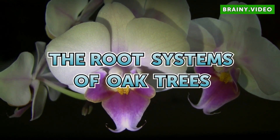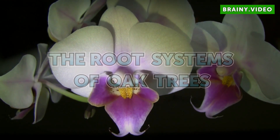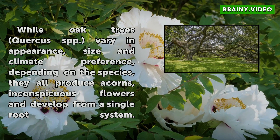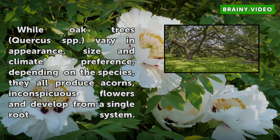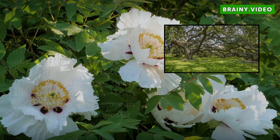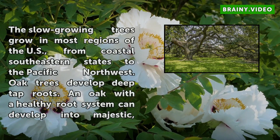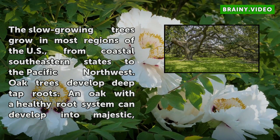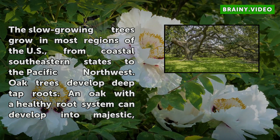The Root Systems of Oak Trees. While oak trees (Quercus spp.) vary in appearance, size and climate preference depending on the species, they all produce acorns, inconspicuous flowers, and develop from a single root system. These low-growing trees grow in most regions of the U.S., from coastal southeastern states to the Pacific Northwest.